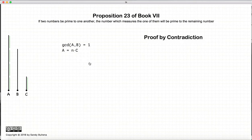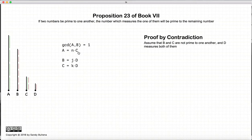So we are going to prove this through contradiction. Our starting conditions are a and b are relatively prime and c measures a. Now assume that b and c are not relatively prime. In other words there's a number d which is not 1 which measures b and c.